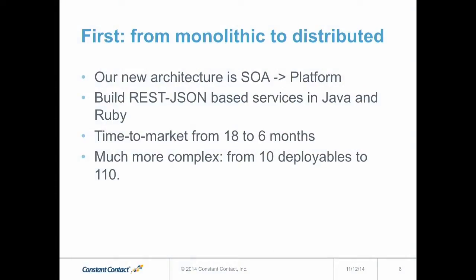The first thing before we actually got to the data tier is we set a completely new technology strategy. Instead of one gigantic build taking 45 minutes, we want to have an SOA — in our case, really a RESTful JSON-based architecture. It allowed us to reduce the time to market from 18 to six months. It's much more complex — you go from 10 deployables to 110. And then comes the data problem: how do we scale data?